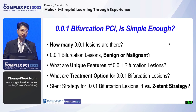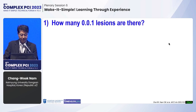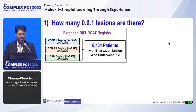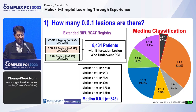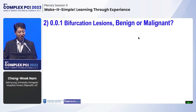To establish some standard treatment strategy, we need to answer five key questions. To get those answers, I gathered many registry datasets. The first question is: how many 0-0-1 lesions appear in daily practice? We included three large bifurcation registries from COBIS 2 and 3 and the RAIN registry from an Italian group, merging about 8,434 patients with bifurcation PCI. The Medina classification 0-0-1 accounted for 4.1%, making it a very rare situation.